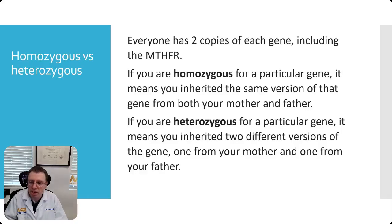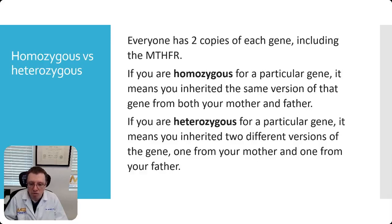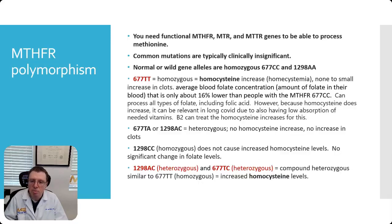Let's talk about homozygous versus heterozygous, because this goes into the MTHFR and how it works. Everybody has two copies of the gene. If you're homozygous, that means you've inherited the same version of the gene from both your mother and your father. If you're heterozygous, you've inherited two different versions — one from your mother and one from your father. You need functional MTHFR, MTR, and MTRR genes to be able to process methionine.